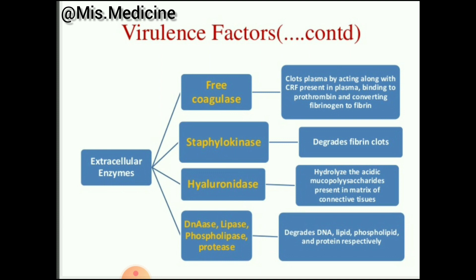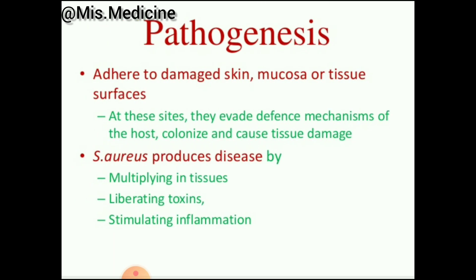Extracellular enzymes include free coagulase, staphylokinase, hyaluronidase, DNase, lipase, phospholipase, and protease. Free coagulase clots plasma by acting with coagulase-reacting factor (CRF) present in plasma, binding to prothrombin and converting fibrinogen to fibrin. Staphylokinase degrades fibrin clots. Hyaluronidase hydrolyzes acidic mucopolysaccharides present in the matrix of connective tissues. DNase, lipase, phospholipase, and protease degrade DNA, lipid, phospholipid, and protein respectively.